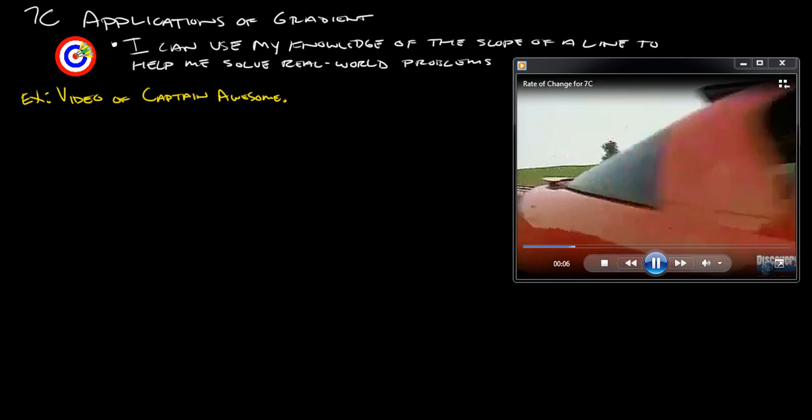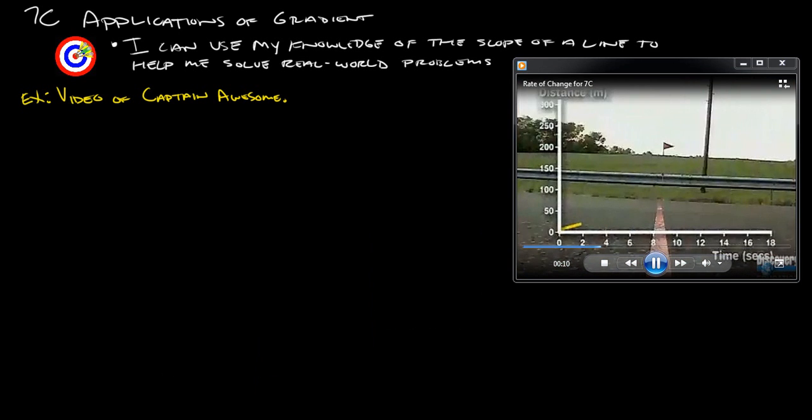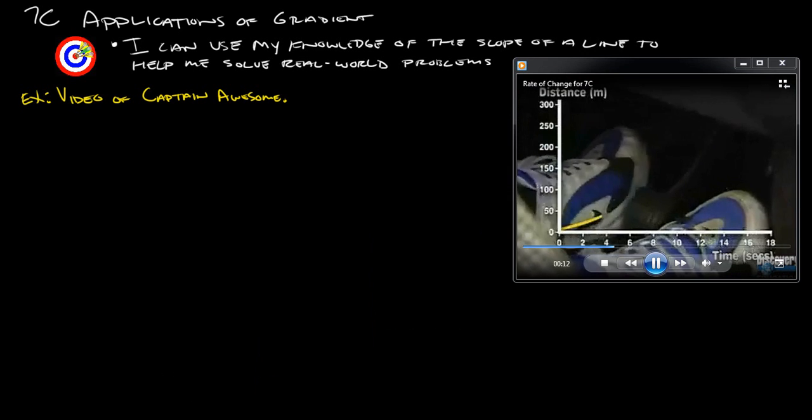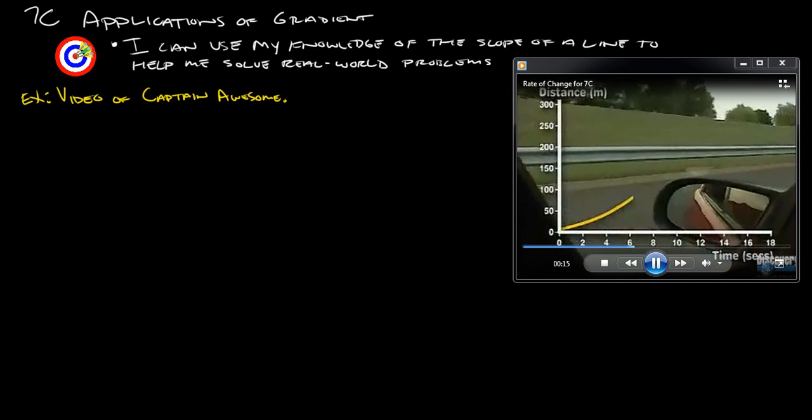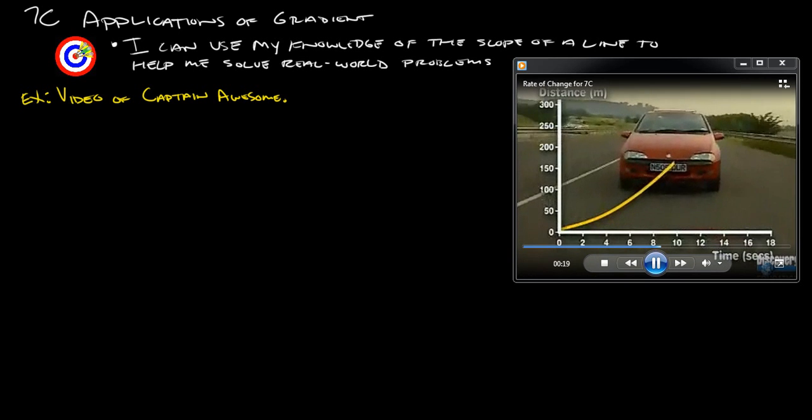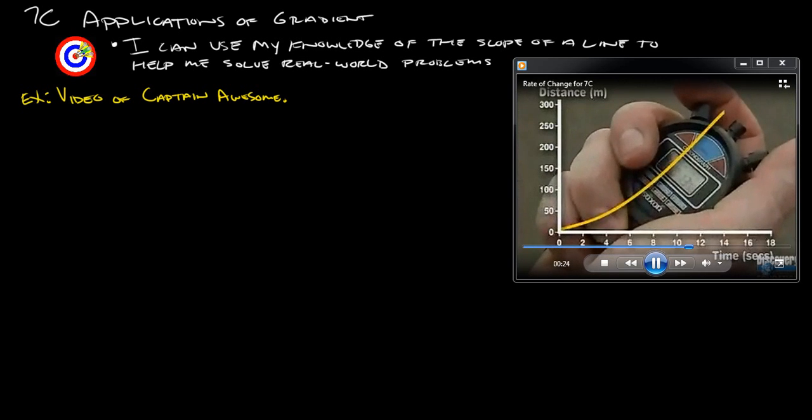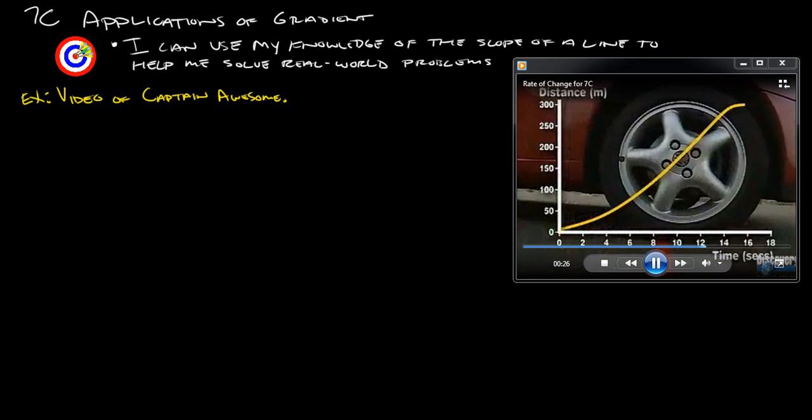So anyway, what he's doing is he's actually taking his car and driving along a road starting from stop and then cruising up all the way to his top speed, which he's doing here. And then on this axis down here, on the x-axis, this is time in seconds, and then on the y-axis it's the distance in meters. Okay, so here's his trip here that he took and he's starting down here at zero.